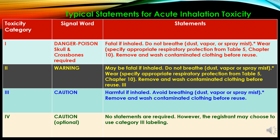Now typical statements for acute inhalation toxicity. In toxicity category 1, the signal word is 'Danger/Poison,' a skull and crossbones is required, and the statement is: fatal if inhaled; do not breathe dust, vapor or spray mist; wear appropriate respiratory protection. In category 2, the signal word is 'Warning,' and the statement is: may be fatal if inhaled. In category 3, the signal word is 'Caution,' and the statement is: harmful if inhaled; avoid breathing. In category 4, the signal word is 'Caution,' and no statements are required, though the registrant may choose to use category 3 labelling.